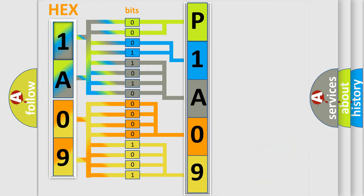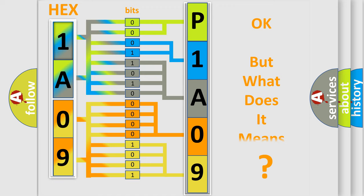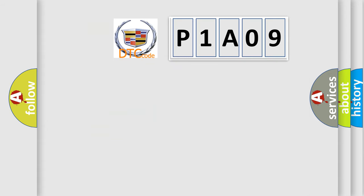We now know in what way the diagnostic tool translates the received information into a more comprehensible format. The number itself does not make sense to us if we cannot assign information about what it actually expresses. So, what does the Diagnostic Trouble Code P1A09 interpret specifically for Cadillac car manufacturers?